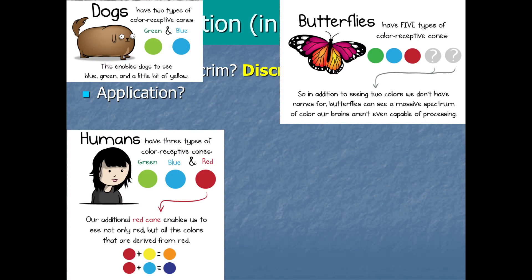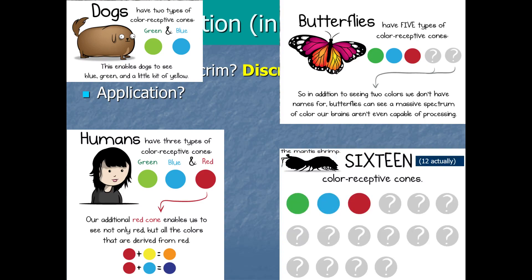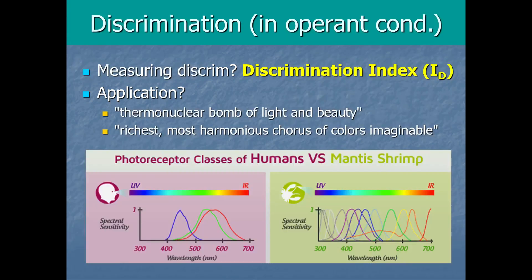Then, in this webcomic of his, he goes on to describe this badass little mantis shrimp, a creature that not only can punch with the force of a .22 caliber bullet, but also happens to have 16 types of cones, he says. Though it turns out he got that detail wrong. They actually have 12 types of cones. But still, holy crap, right? Whoa. So in the comic, he asks us to try to imagine what a mantis shrimp sees in a rainbow and describes it as a thermonuclear bomb of light and beauty. The richest, most harmonious chorus of colors imaginable.